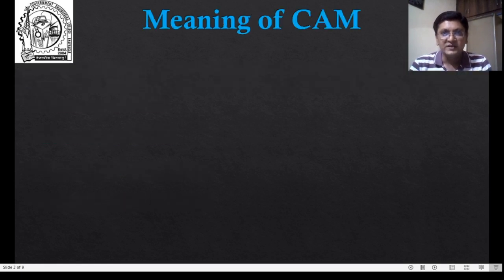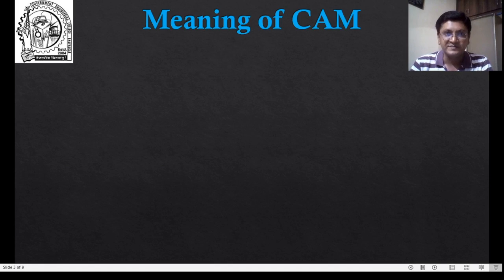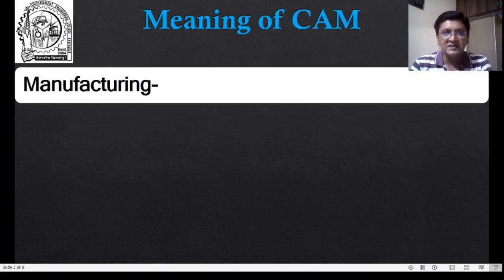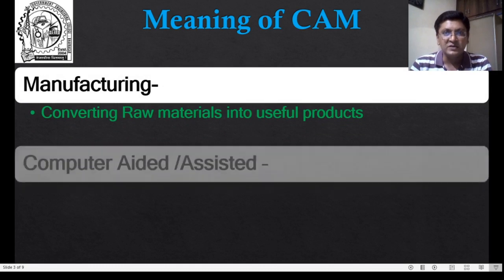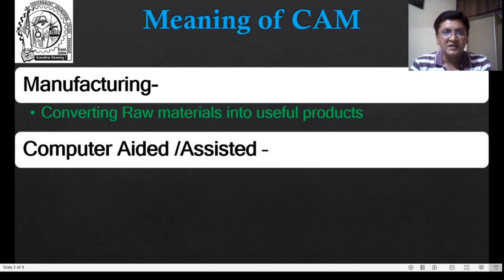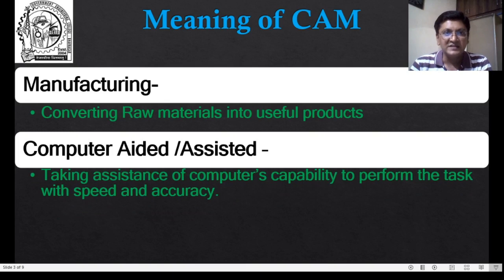Let us start exploring the meaning of CAM. CAM is an abbreviation of Computer Aided Manufacturing. Manufacturing in general is termed as converting raw materials into useful products. And when we say Computer Aided, the basic understanding is taking assistance of a computer's capability to perform tasks with speed and accuracy.